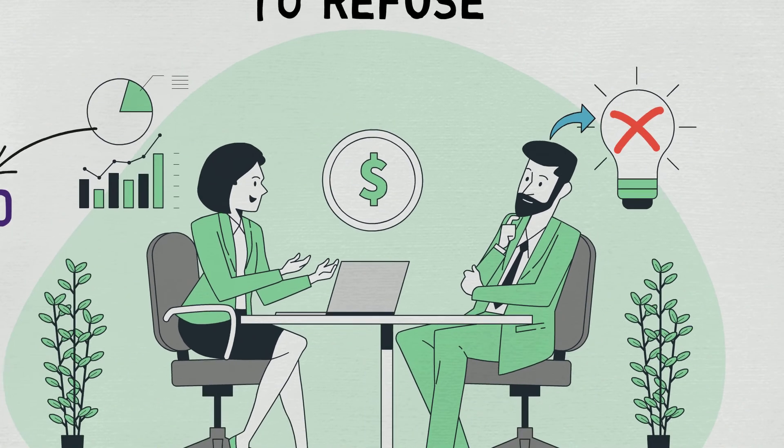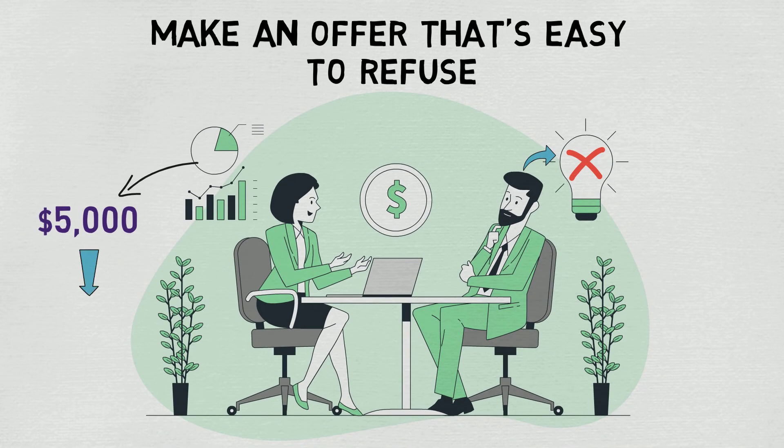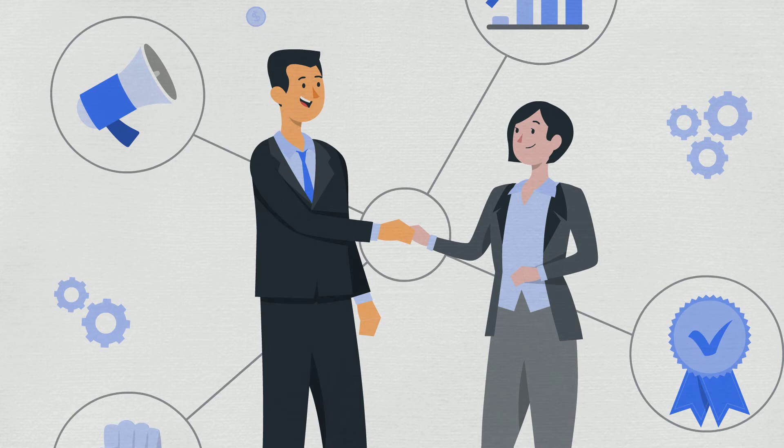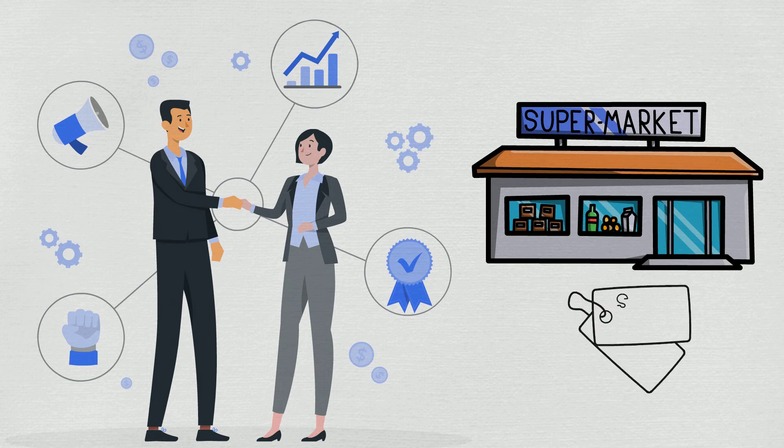Then you hit them with a second offer, your realistic one that's really distinct from the first. In our example, this might be something like $3,000 for your services. The other person is much more likely to comply because of this distinct jump in price. Spoiler alert, this is what most store sales signs do to get us to buy things we don't need.